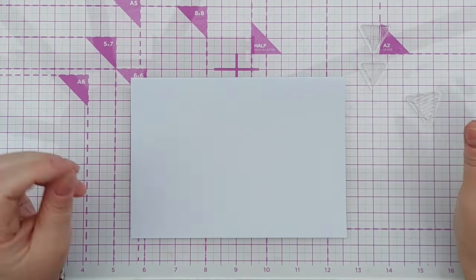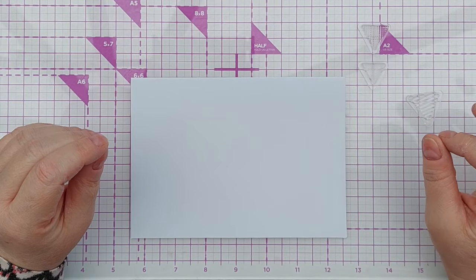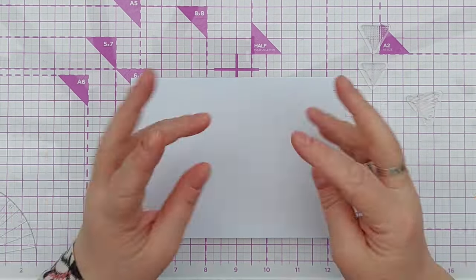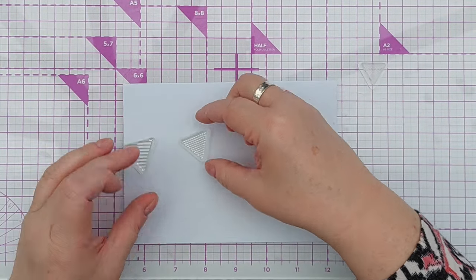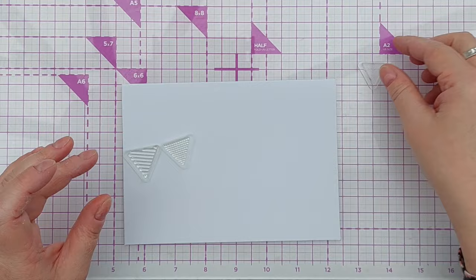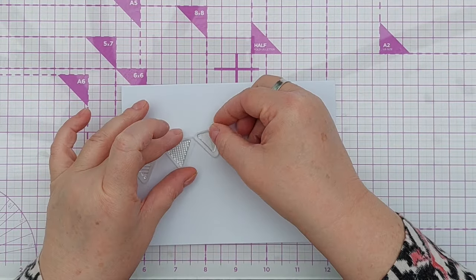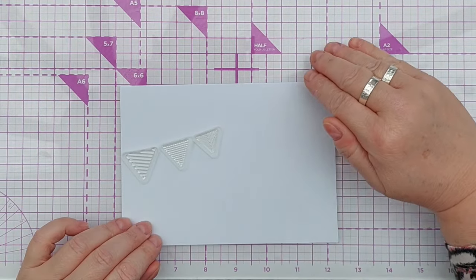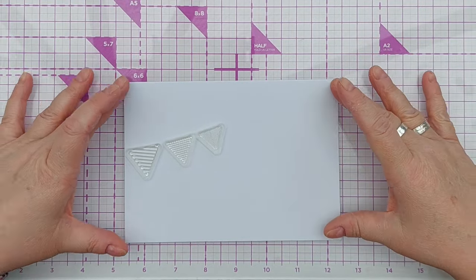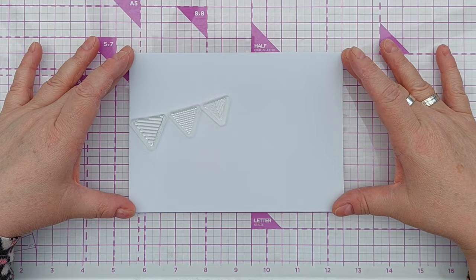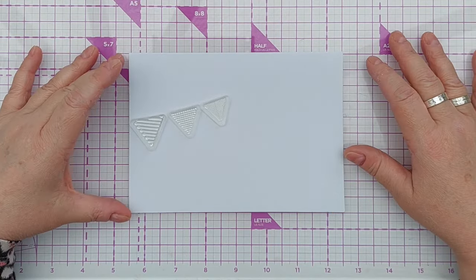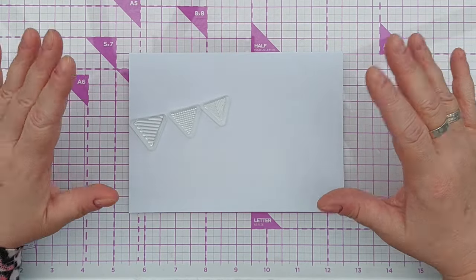To me, triangles always shout bunting, and bunting shouts celebration. So I'm going to make some invitations today with bunting as the motif. I'll use these stamps to add a string of bunting across the front of my card. I think I'm going to work straight onto a five by seven card blank today, no panels or anything, so this could be a one layer or very few layer card.